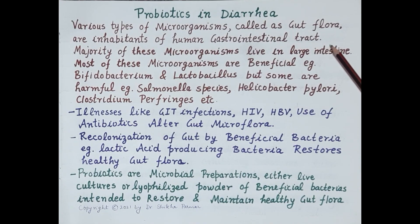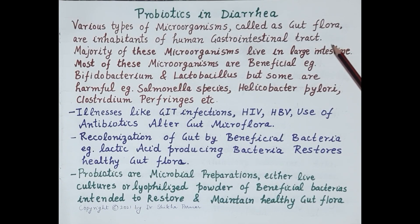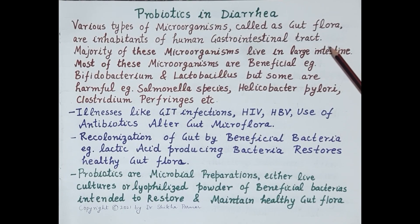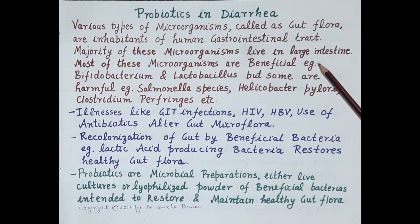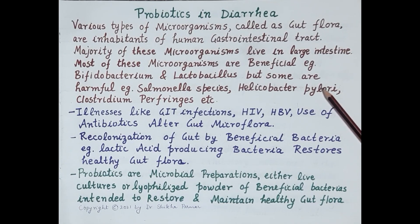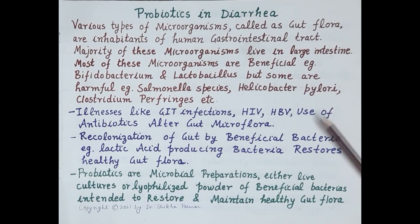The majority of gut bacteria are non-pathogenic and they aid in the metabolism of nutrients and drugs, and prevent colonization of pathogenic microorganisms — meaning they prevent the growth of pathogenic bacteria and strengthen the immunity of the body. Most of these microorganisms are beneficial, for example bifidobacterium and lactobacillus, but some are harmful, for example salmonella species, helicobacter pylori, and clostridium perfringens.